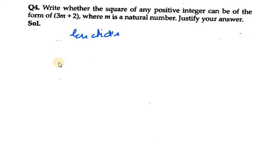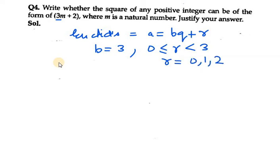By Euclid's division lemma we can say a equals bq plus r, where a is divided, b is divisor, q is quotient, and r is remainder. We know all the values here. b is defined as 3 because we are given 3m. Now we know that r lies between 0 and b. So r can take 3 values: 0, 1, and 2.